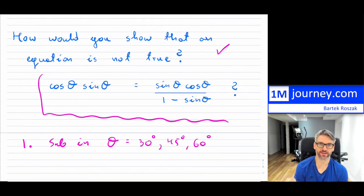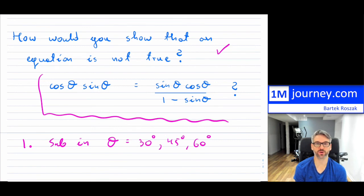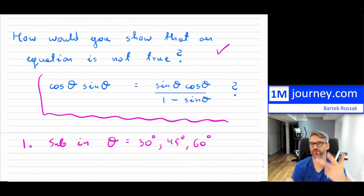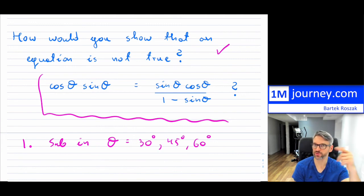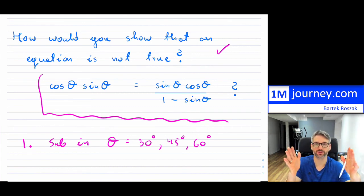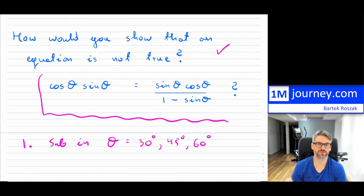As a student you probably will have limited time on your quizzes or tests. But as soon as you notice that one of them is false, then you stop — there's no need to show anything further. Now I'm actually going to try to see if this one is true or not. I don't think it is true — it says cos times sine on one side, and on the right-hand side it says sine times cos, divided by 1 minus sine. Those are just swapped and then dividing by 1 minus sine — so this can't really be true. So I'm going to substitute in 30 degrees.